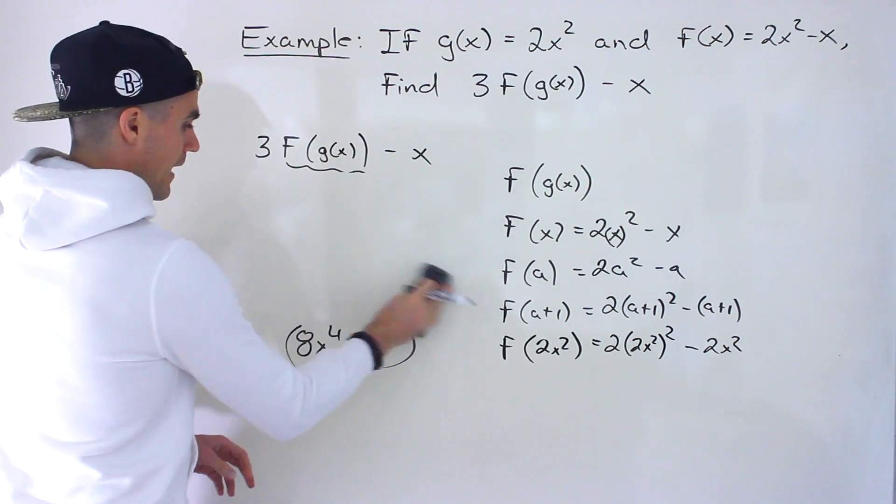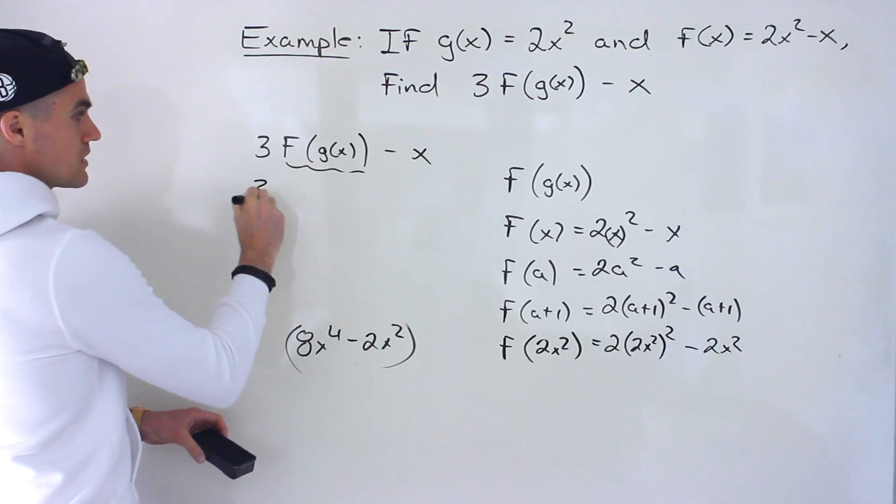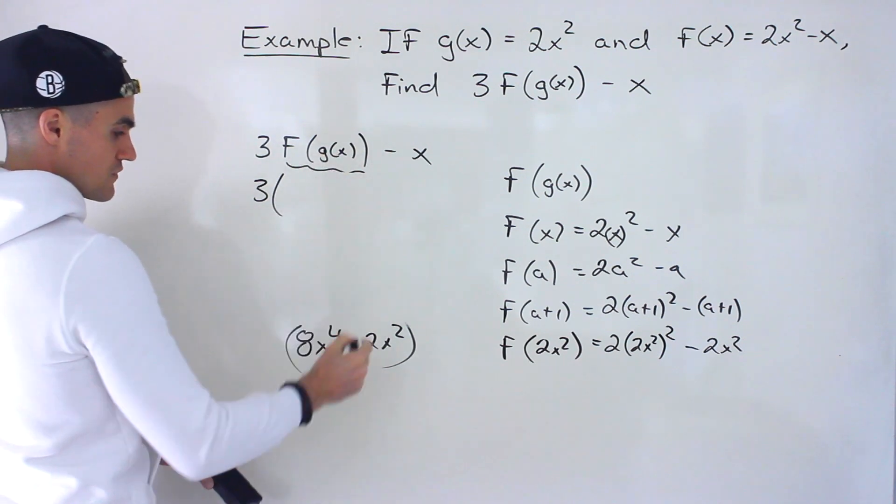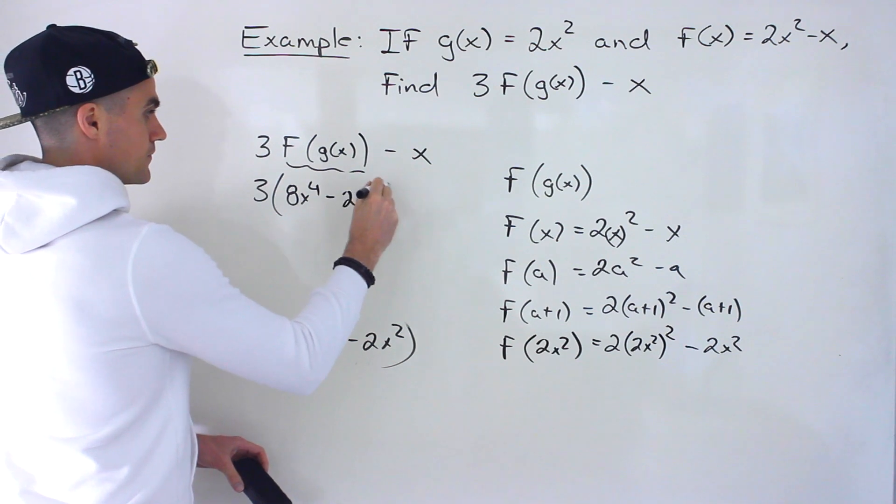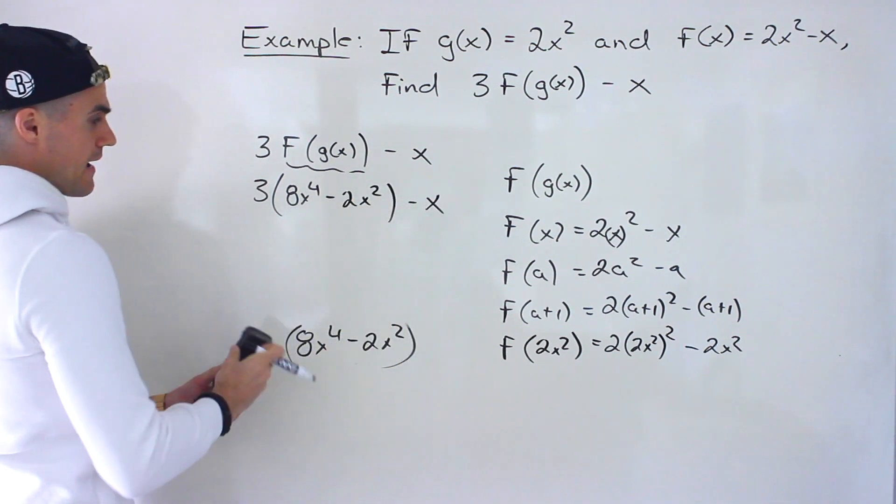So what we would end up having is 3 times f of g of x, which is this, which is what we ended up getting, minus x.